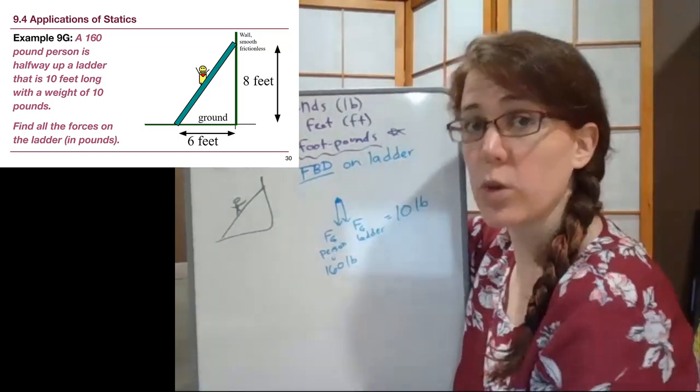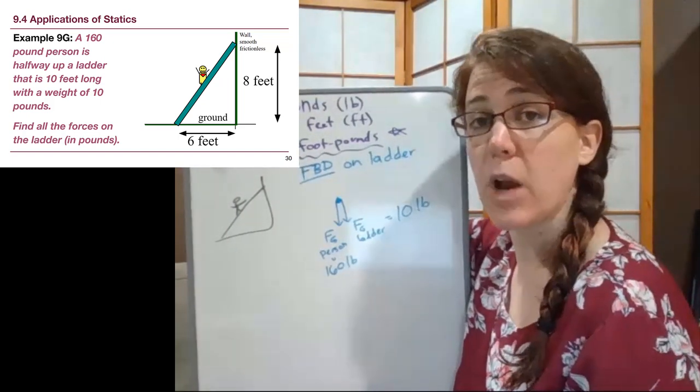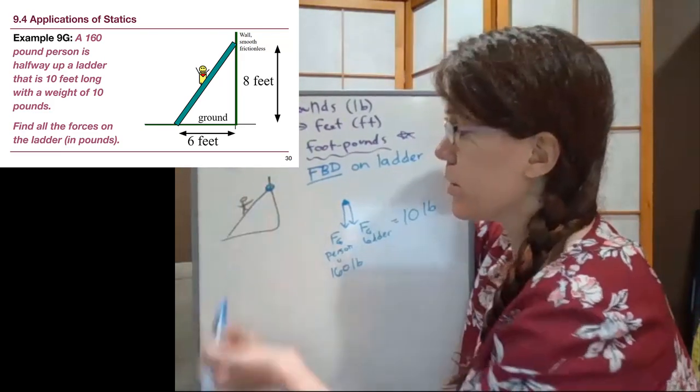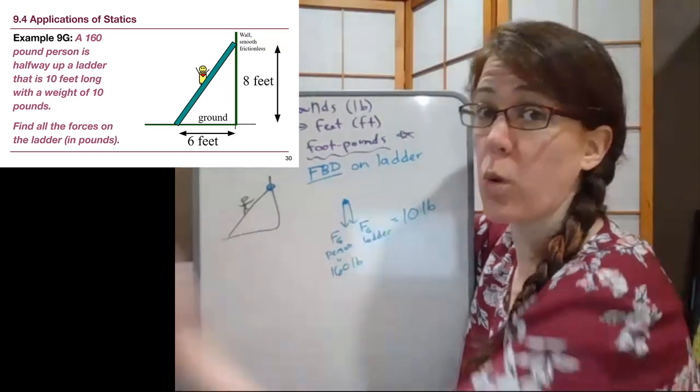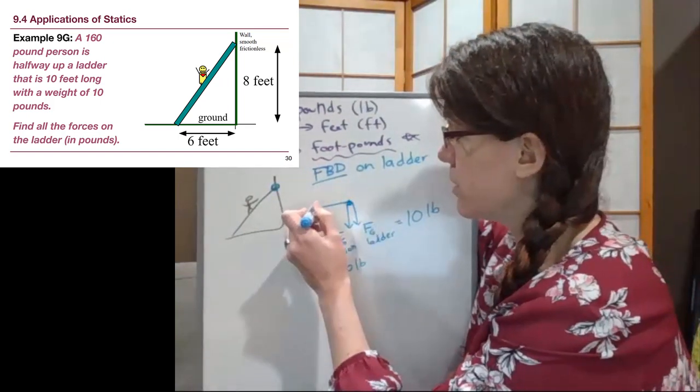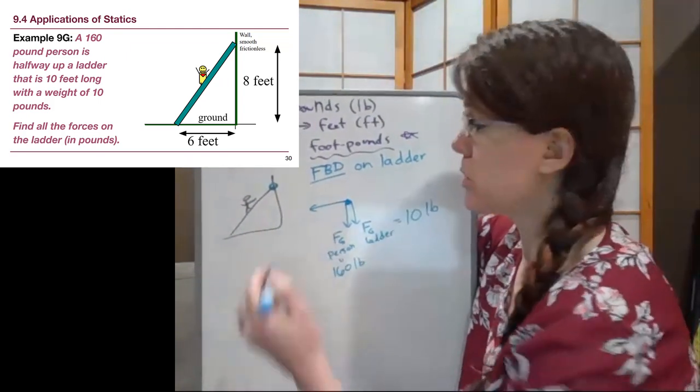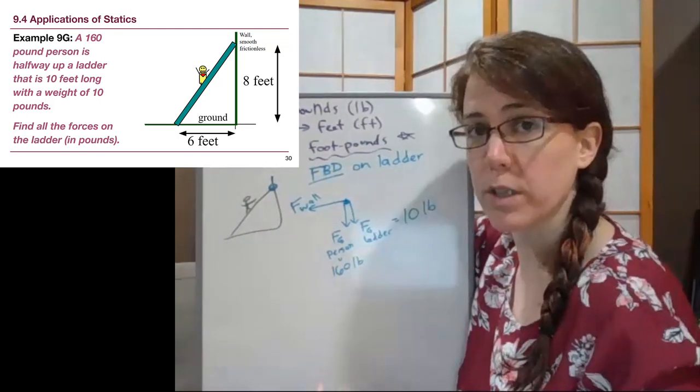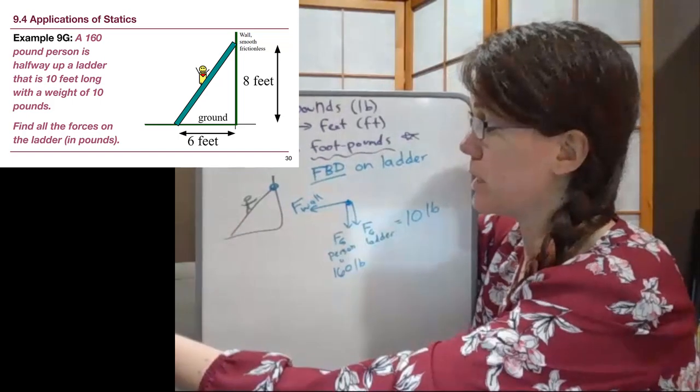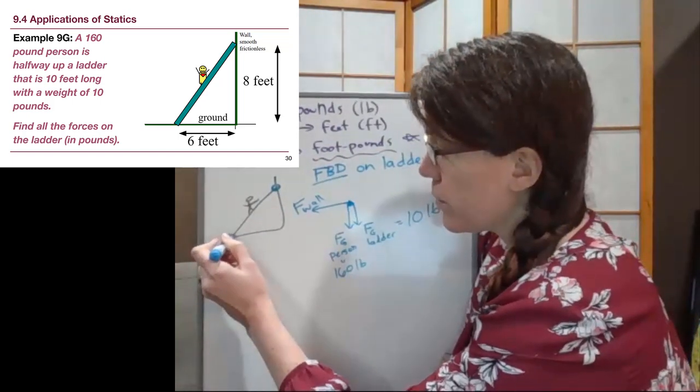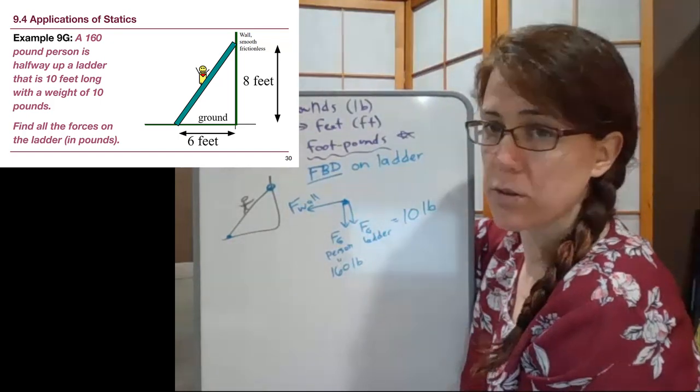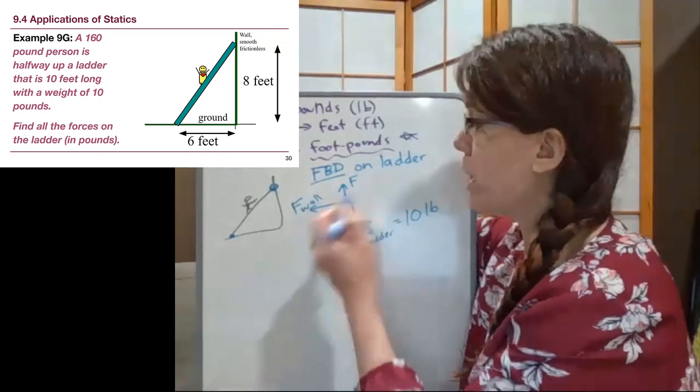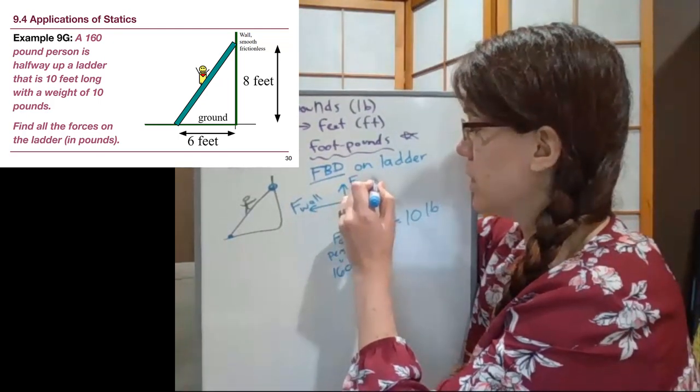We aren't given in words or numbers any other forces, but now we can start to think about what is happening to this ladder. It is in contact with the wall, which means the wall is pushing against the ladder in what we can think of as a normal force. But to be really clear with ourselves, I'm going to call it F_wall. It is the normal force, the surface force from the wall pointing directly to the left. We also have that the ladder is on the ground and in contact with the ground, which means there is a normal force from the ground, but I'm going to call that F_ground.